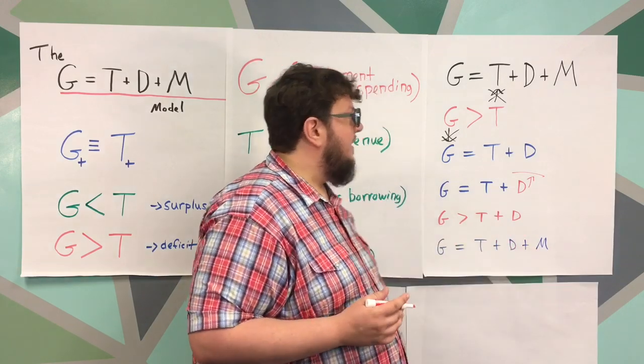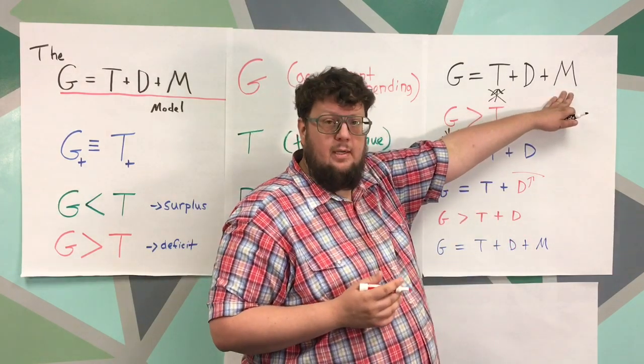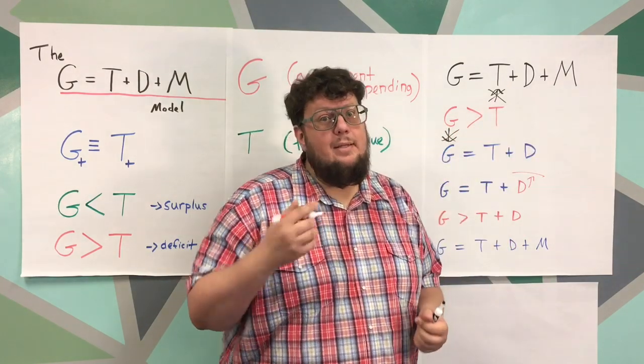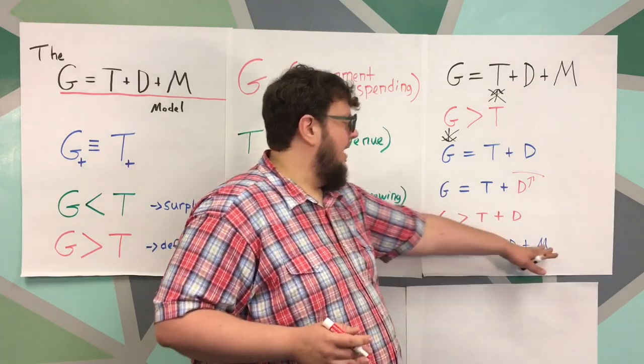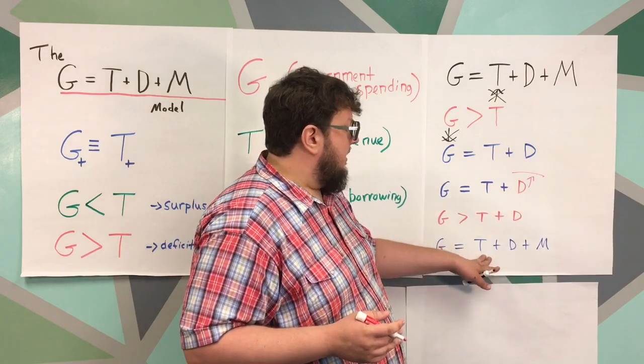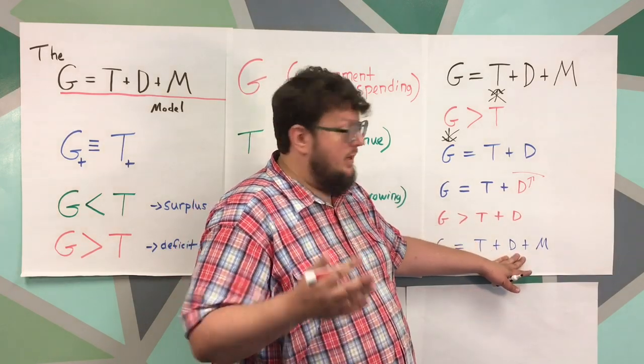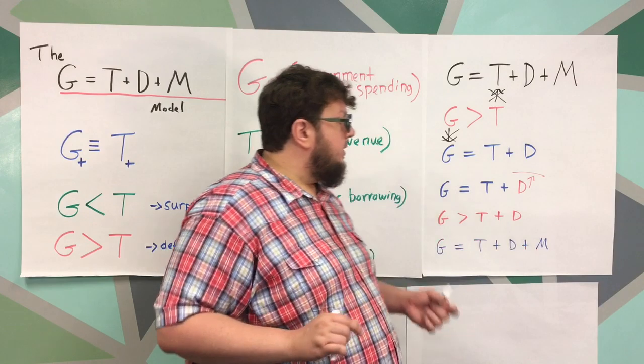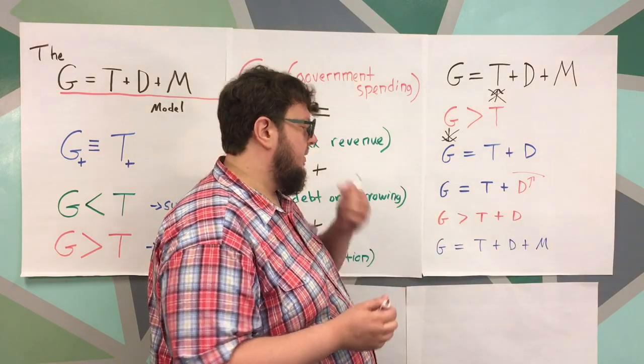Well, at that point, you're going to have to add monetization to it, expand the money supply, print some money, buy what you need, and that balances out your equation again. So your government spending is going to be equal to your tax revenue plus your debt, whatever you're able to borrow, plus your monetization, your money supply expansion there.